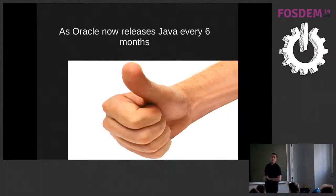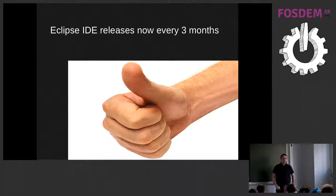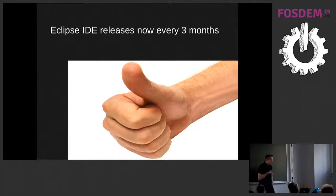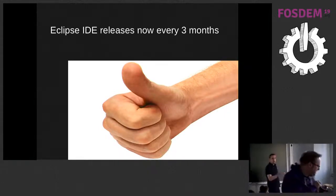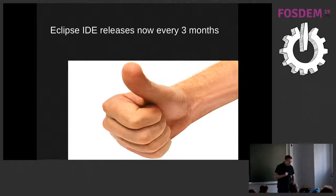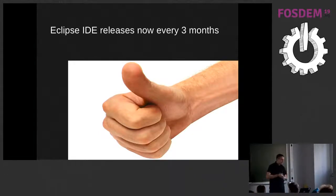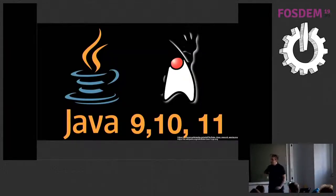As a direct result of Oracle deciding to release Java every six months, the Eclipse project decided to release every three months. There are also legal things which prevent Eclipse from providing an official build supporting a Java version still in development — so there are always tricks like feature patches to work around this. But as we may not hit exactly the deadline of a Java release, at least you don't have to wait very long before you get official Java support. This fast release cycle enables us to support Java 9, 10, 11, and 12 once it's out.